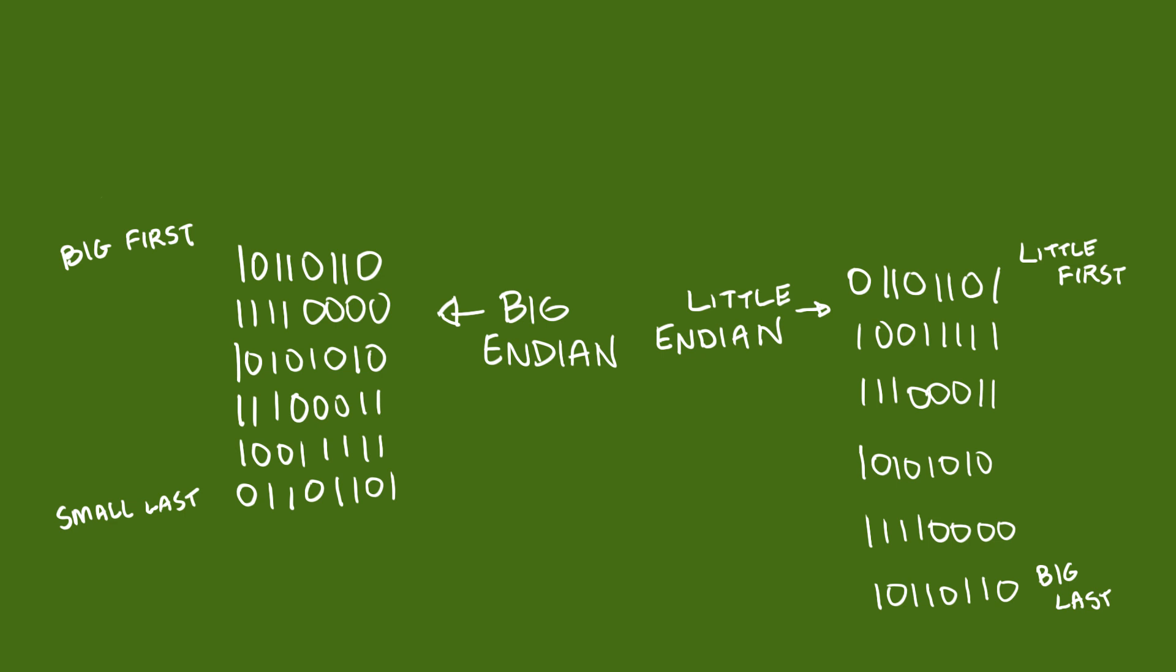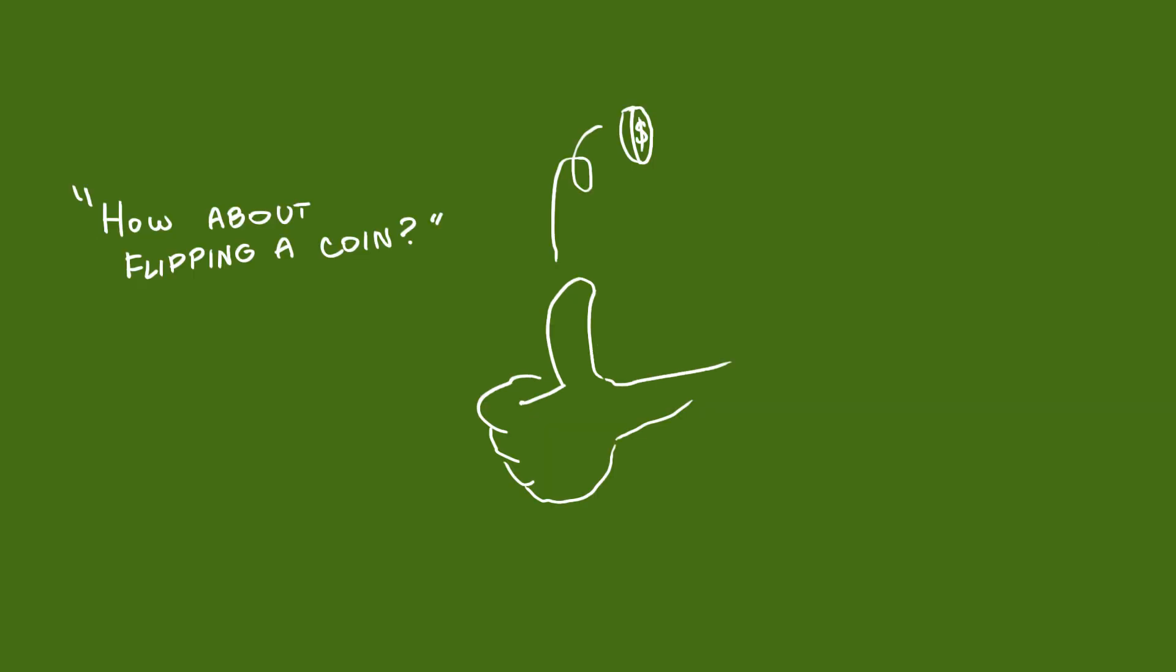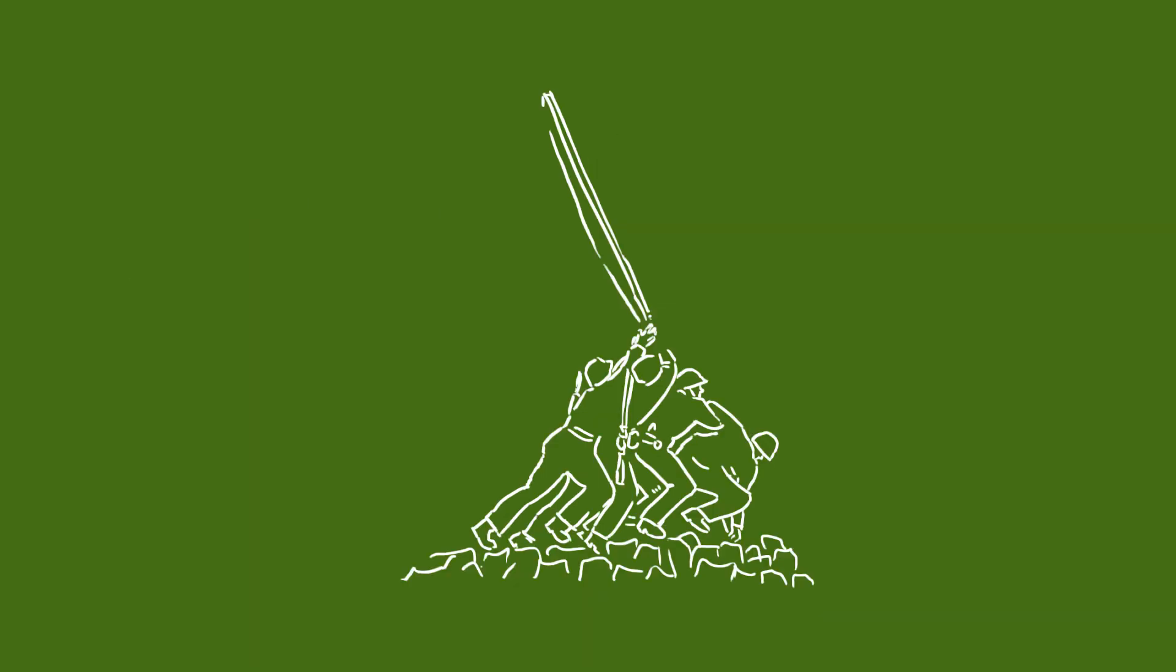He concluded that it didn't matter which one we picked so long as we collectively chose one and stuck with it. How about flipping a coin? This entirely sensible suggestion was, of course, promptly ignored, and both Little Endian and Big Endian systems exist to this day. The only thing that stuck was the names.